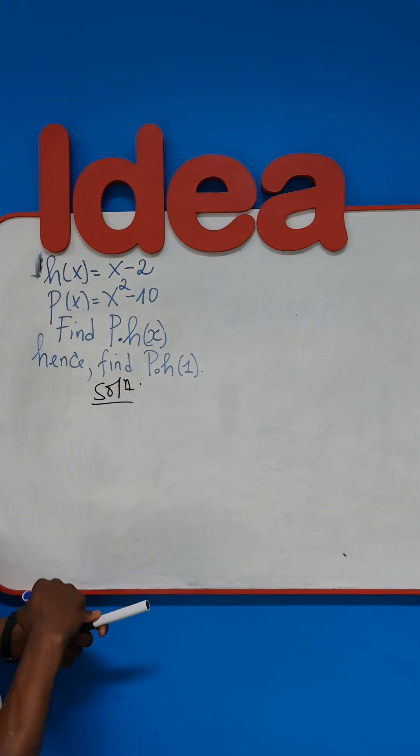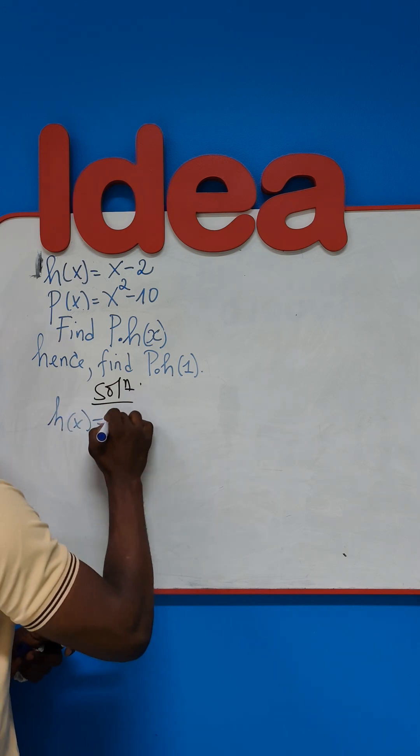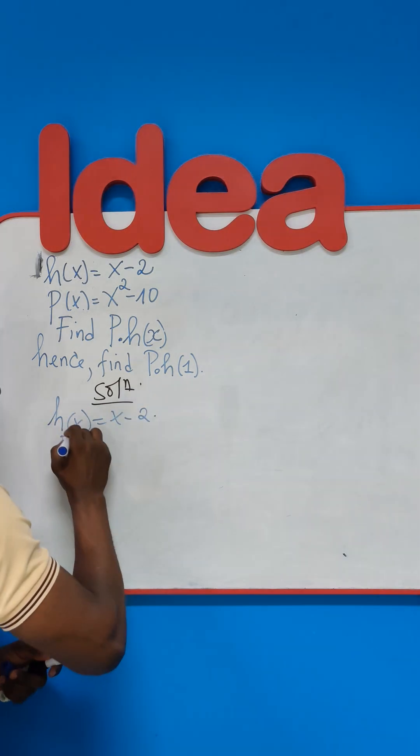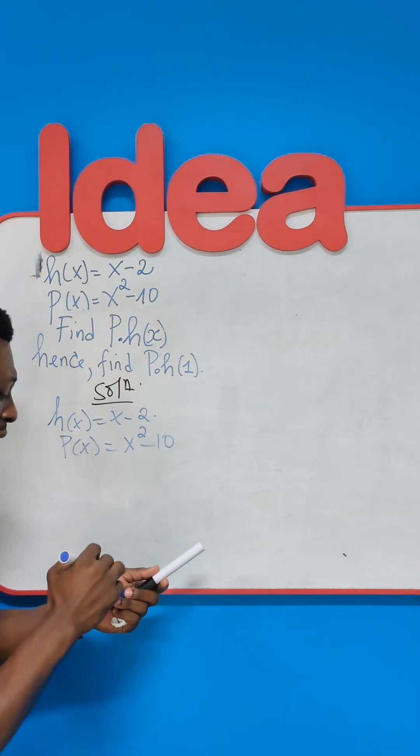So we start by rewriting both functions. We will remind ourselves that H of X is the function X minus 2. And then P of X is the function X squared minus 10.